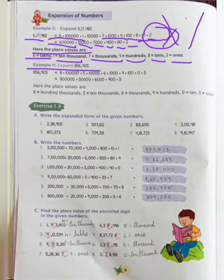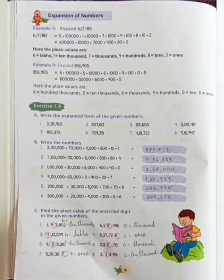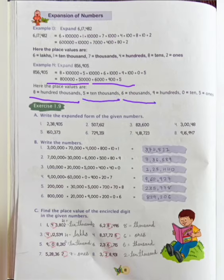Now example 14. Expand 8,56,905. First we expand: 8 multiplied by lakh, plus 5 multiplied by 10,000, plus 6 multiplied by 1,000, plus 9 multiplied by 100, plus 0, plus 5. So our answer will be 8 lakh, 50,000, 6,000, 900, and 5. The place values are 8,00,000; 50,000; 6,000; 900; 0 tens; and 5 ones.